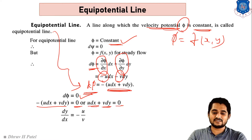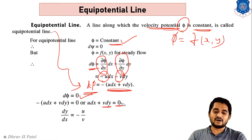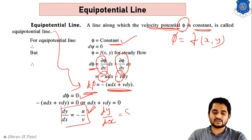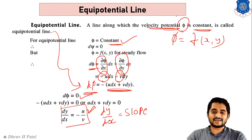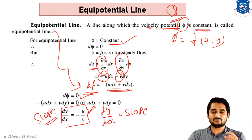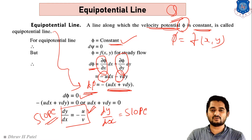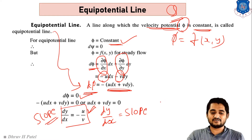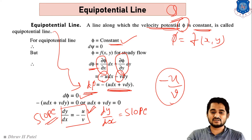From the equipotential line condition, u dx + v dy = 0, which gives dy/dx = -u/v. Here dy/dx is the slope, so the slope of the equipotential line is minus u by v. In any examination they can ask you to derive the equation of slope for the equipotential line — remember the definition of equipotential line, set d phi equal to 0, and you get the slope as -u/v.